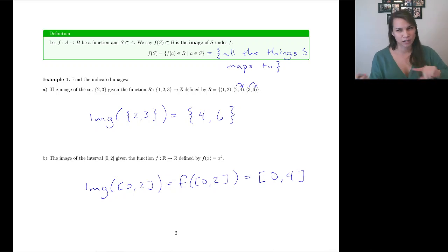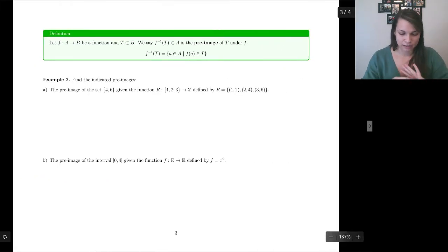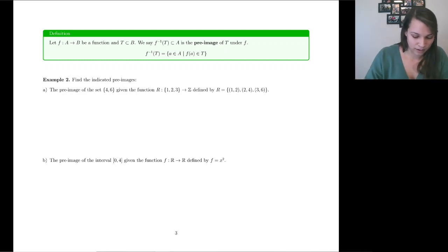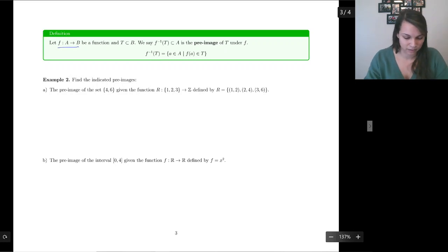Now we're going to kind of talk about going in reverse. We're going to talk about pre-images. And what I mean by that is, here we go. First off, I know it's a confusing notation, but we've got a function. It's going from A to B. And we have a subset of B. We're going to call it T. We say that this, which is not an inverse, I'm not sure who decided on this notation, but it's not inverse.